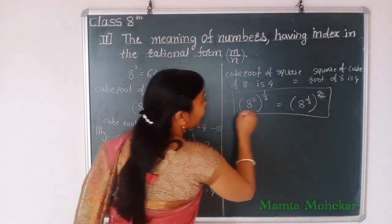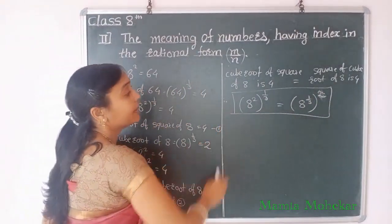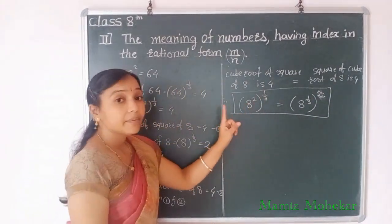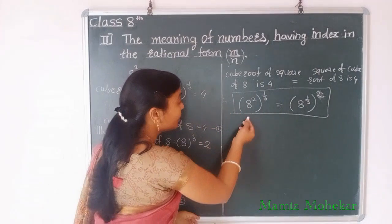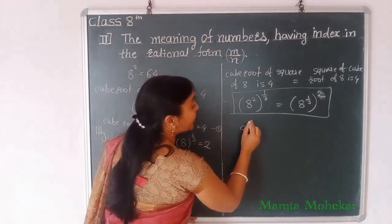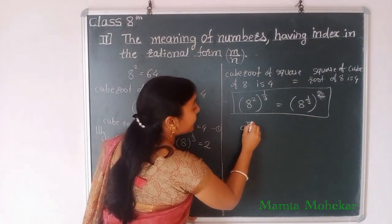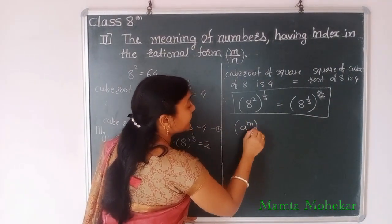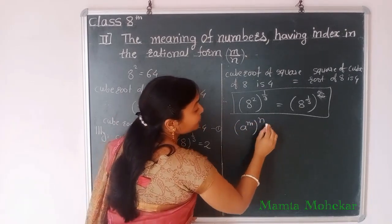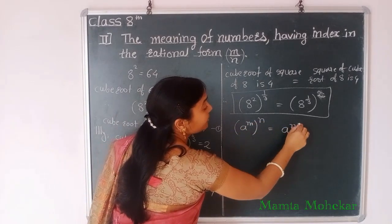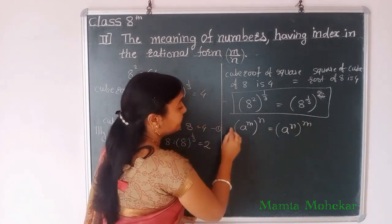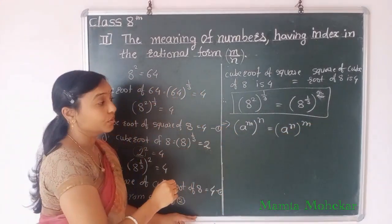From this example, we can write down our rule of indexes: a raised to power m, bracket to the power n, is equal to a raised to power n, bracket to the power m. This is our indexes rule.